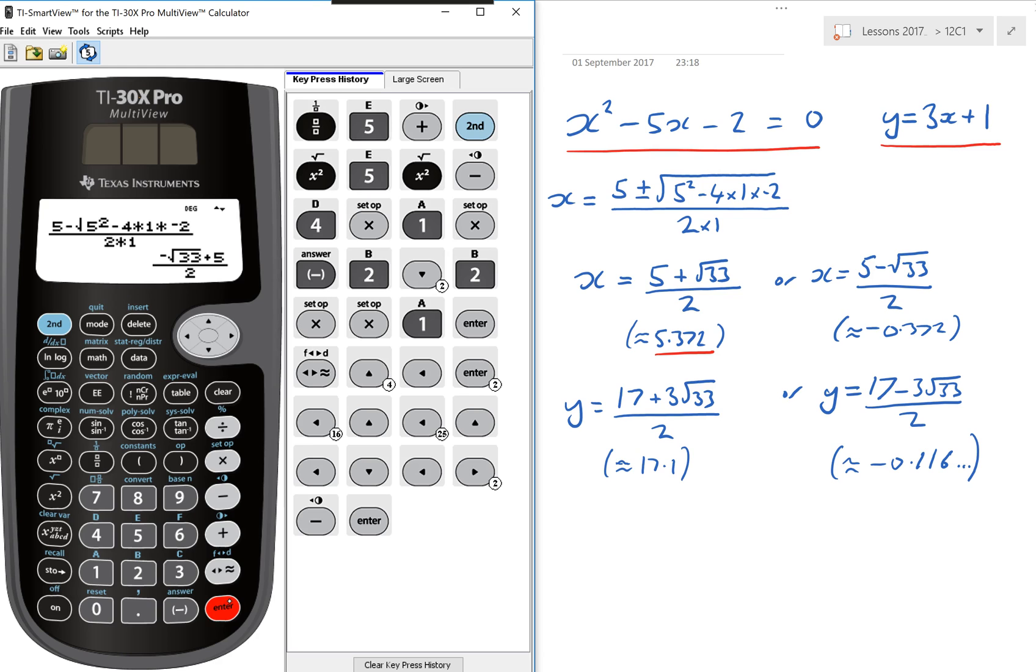Again, it puts the root first. And if I want to, I can press enter to get the rough value to give me the minus 0.37, as I've got here.